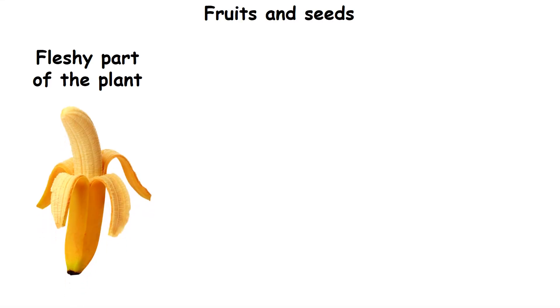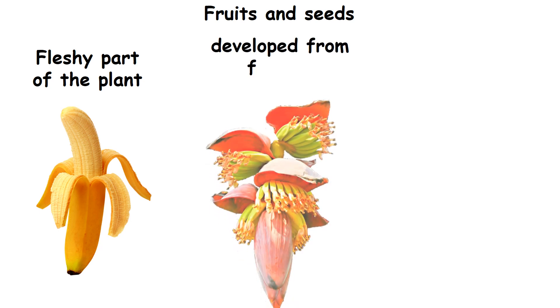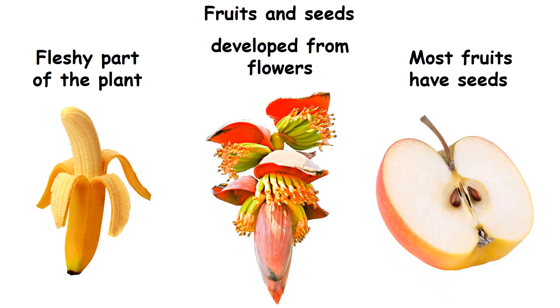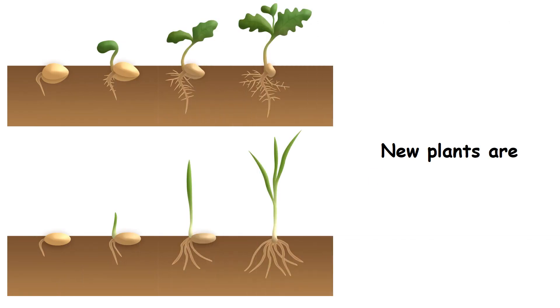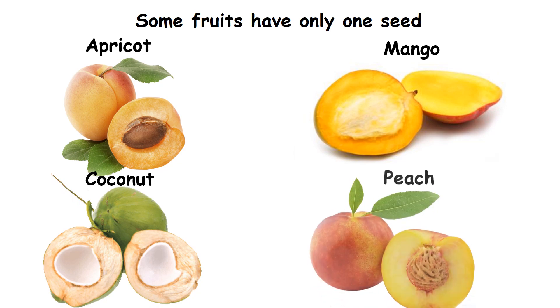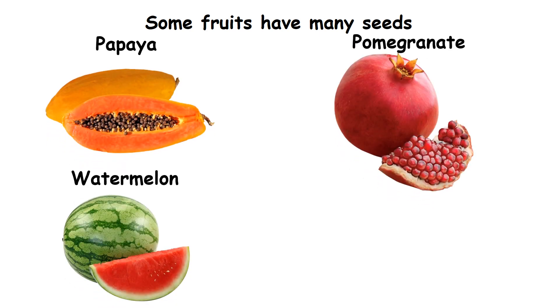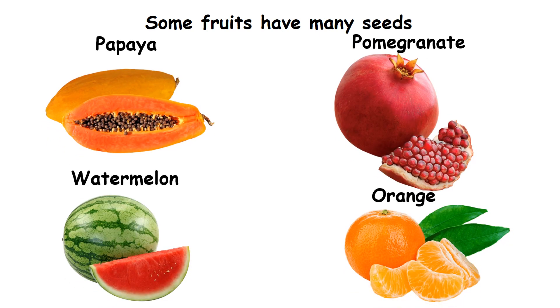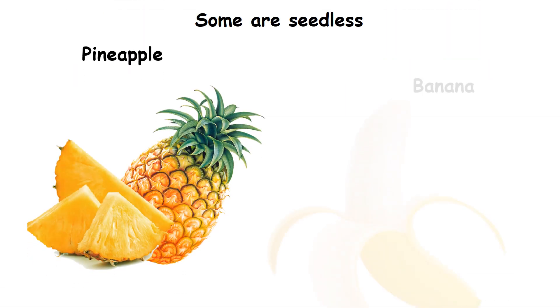Fruits and seeds. Fruit is the fleshy part of a plant. Fruits develop from flowers. Most fruits have seeds. New plants are grown from seeds. Some fruits have only one seed — example: apricot, mango, coconut and peach. Some fruits have many seeds — example: papaya, pomegranate, watermelon and orange. Some fruits are seedless — example: pineapple and banana.